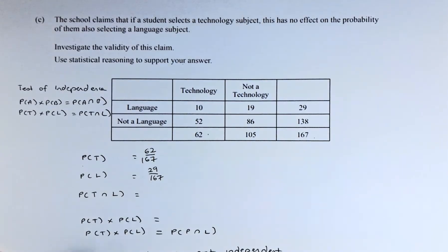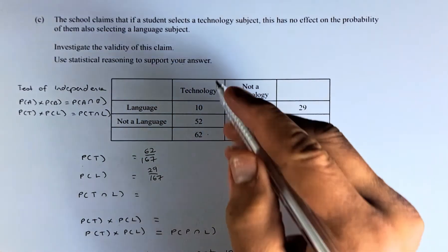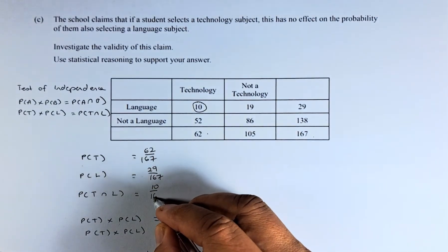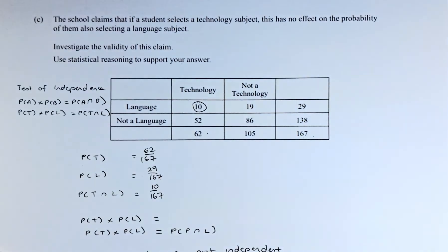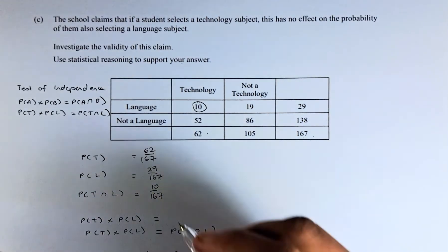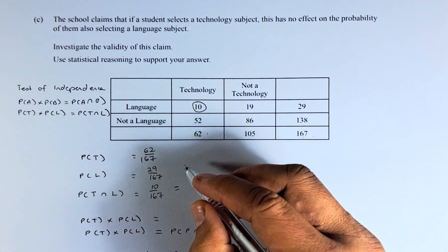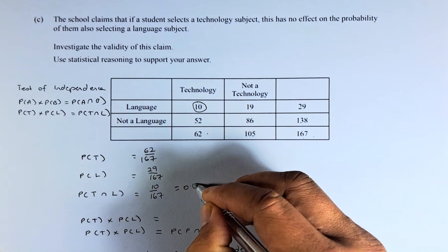Now, we shall look at what is the probability of technology and language. Technology and language is going to be 10. It is 10 out of 167 because the total is 167. Once we have done that, we need to calculate the probability. 10 over 167, if you put in the calculator, is going to be 0.06.